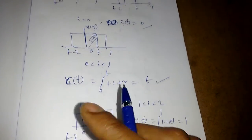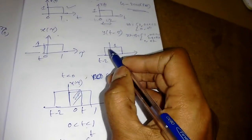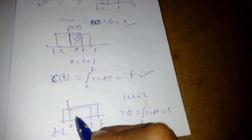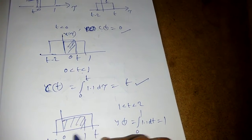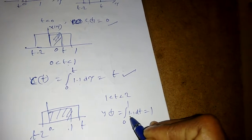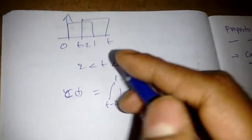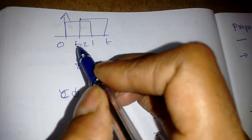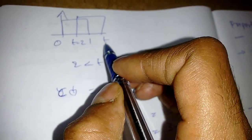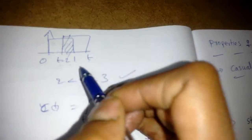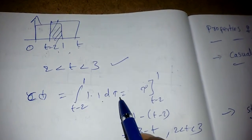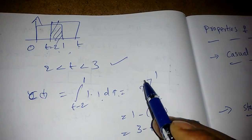For 1 < t < 2, the width of y(t-τ) is larger than x(τ), so the range 0 to 1 lies inside. The common region is 0 to 1, giving integral of 1·1 dτ = 1. For 2 < t < 3, t-2 is inside the box, common region is t-2 to 1, giving 1·1 dτ.